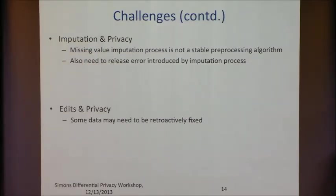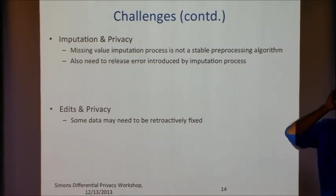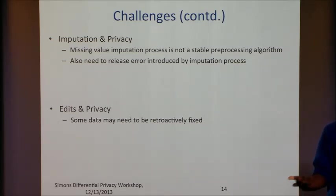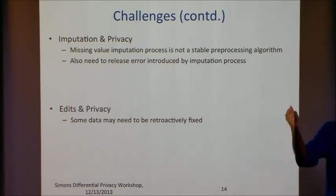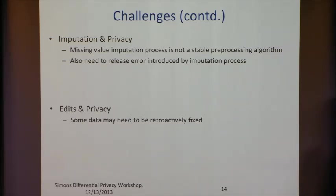An even more interesting problem: sometimes you have errors in the data you used. For instance, you may have gotten data from a state database and they made a mistake — maybe dropped details about an entire county or reported old readings. Retroactively they come back and ask you to fix it, but you've already used up your privacy budget. The question is: what does privacy mean in this retroactive fixing mode? It's not very clear. These are some of the interesting challenges I found when working with the Census.